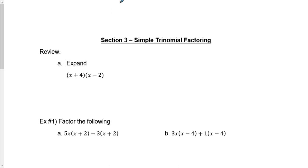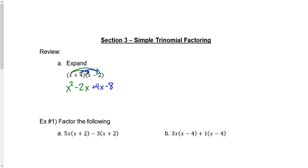We're going to do a quick review before we start getting into simple trinomial factoring. So if we want to expand, we want to distribute. We're going to distribute our x onto both of our terms, getting x squared minus 2x, and our 4 onto both terms, giving us a 4x and a negative 8, leaving us with the answer of x squared plus 2x minus 8.